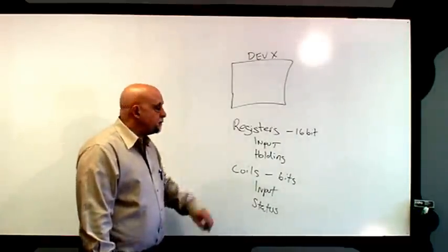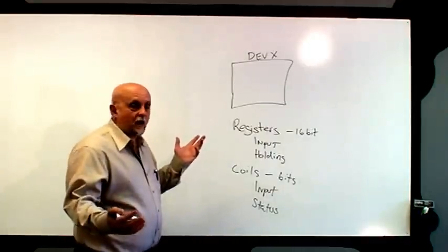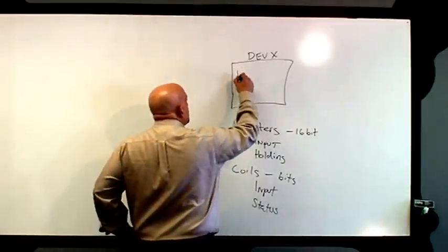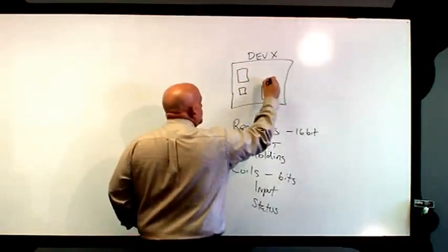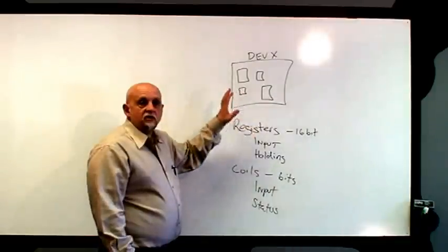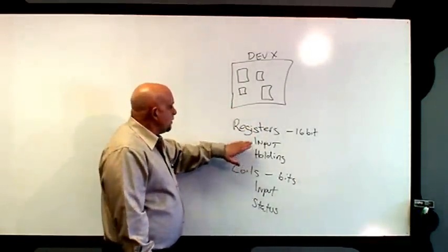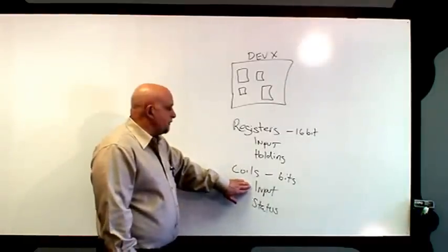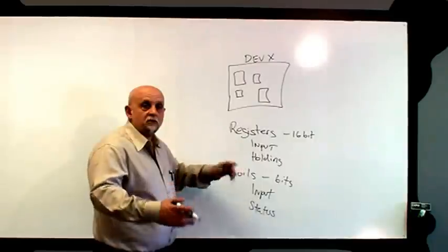Status coils typically could be logic or output. So a manufacturer has to decide: I've got these four different areas — how much do I want of each? They decide how much of each of these data spaces they want to have. They could have none — they could decide we don't want any input registers, no holding registers, no status coils; we're just going to have 10 input coils, which would be just 10 bits.